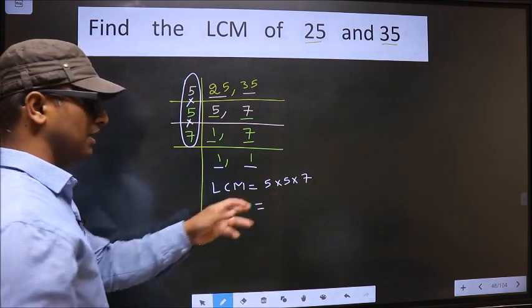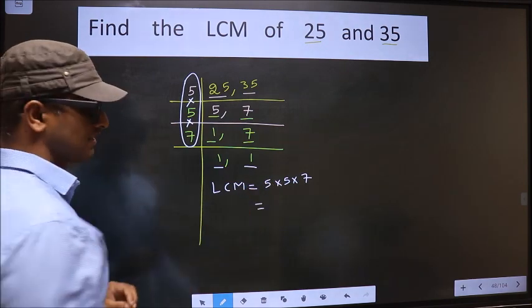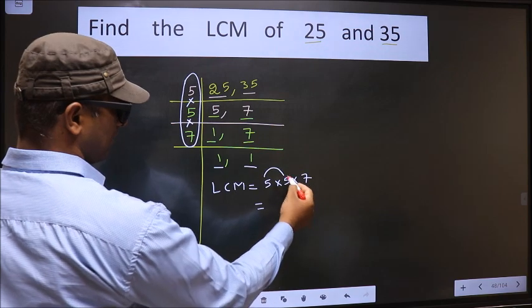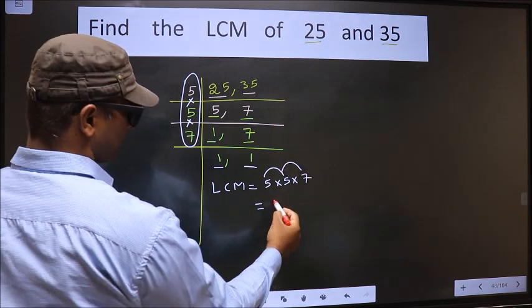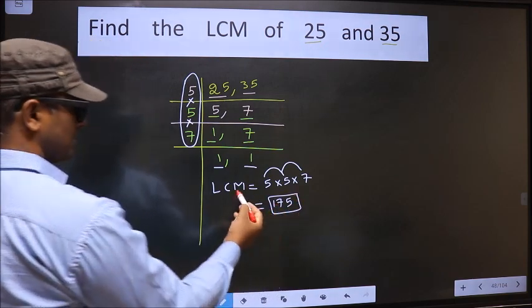Now let us multiply these numbers. That is 5 times 5, 25 times 7. 175 is our LCM.